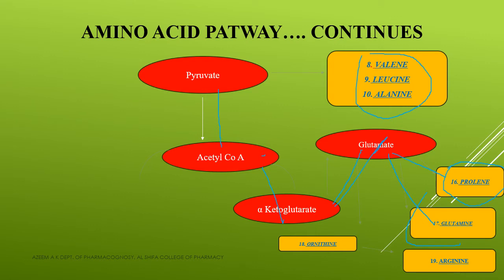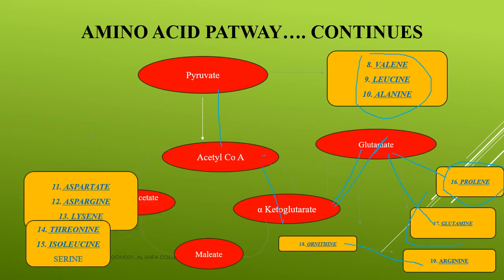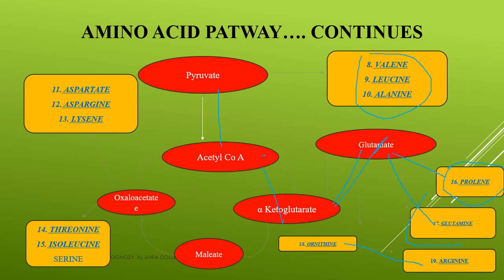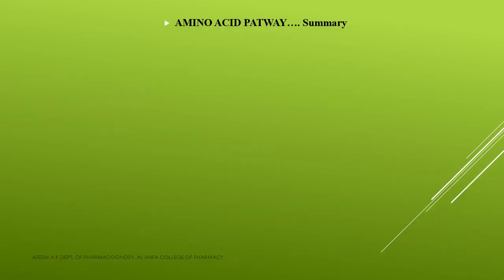From alpha-ketoglutarate, ornithine is also biosynthesized, and from ornithine, arginine is also obtained. After a few more steps in the TCA cycle, malate is obtained, and from malate, oxaloacetate is obtained. From oxaloacetate, three amino acids are biosynthesized: threonine, isoleucine, and serine. Additionally, from oxaloacetate, aspartate, asparagine, and lysine are also obtained. That is the amino acid pathway.